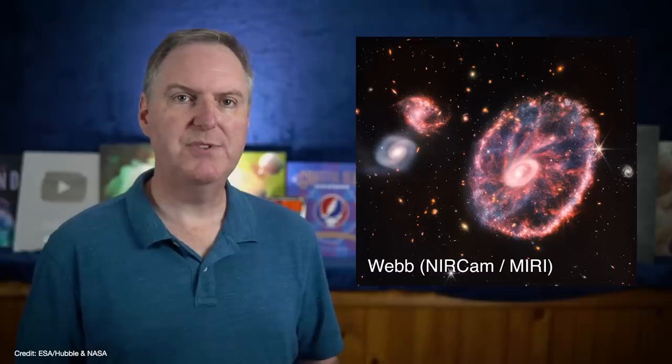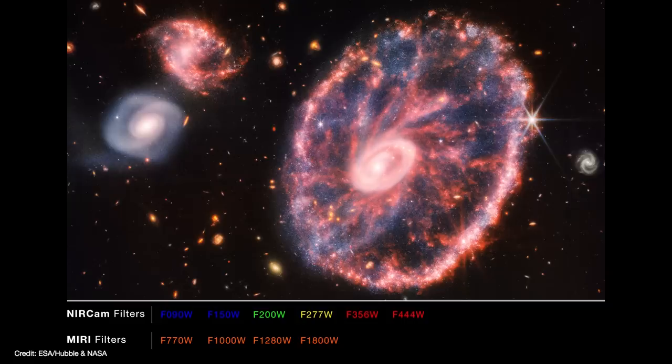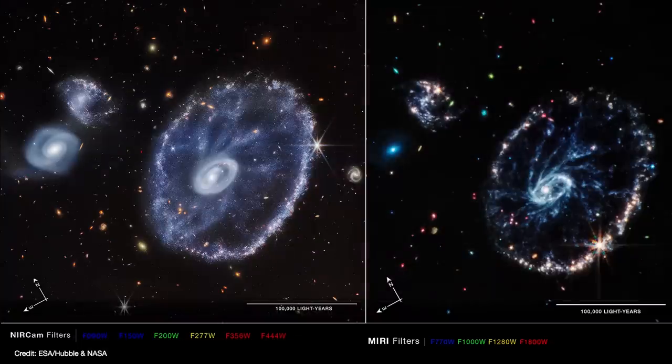This image is a composite of Webb's near-infrared camera and its mid-infrared instrument. The colors were chosen such that the shorter wavelengths are blue and the longer wavelengths are red. So together, they give us like a pink rosé cartwheel because of the colors that the imaging team just happened to use. But if we consider the images from the two instruments separately, we can begin to see different structures within the galaxy.